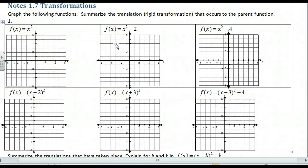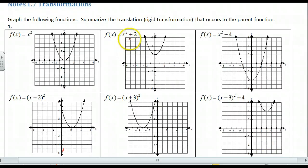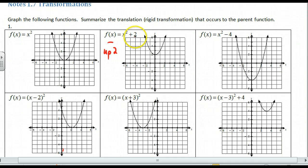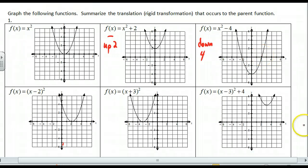Summarize how it changed from this one, and then summarize how this graph changed from the parent function. Go ahead and try that, pause, and I'll come back with more information. If you look at this first one, everything went up 2. We took the original f(x) and added 2 to every y-coordinate — x squared changed by adding up 2. All my y-values went up by 2. For this other one, all my y-values went down by 4, so it shifted the graph down 4. These are all translations — a translation is just a slide.